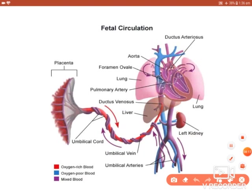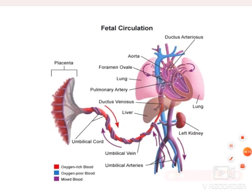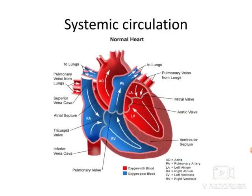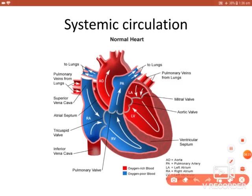Before going to fetal circulation, I will describe adult circulation. In this coronal view through the heart, you can see the right atrium, right ventricle, left ventricle, left atrium, and the superior and inferior vena cava.